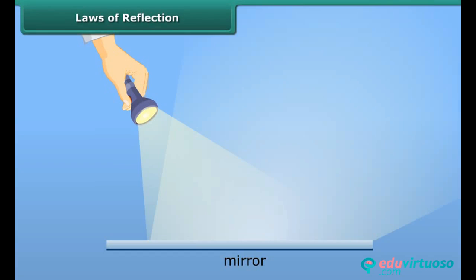The light travels in a straight line. Just as a ball bounces off a wall when we hit it, similarly, the light bounces off objects when it strikes them.